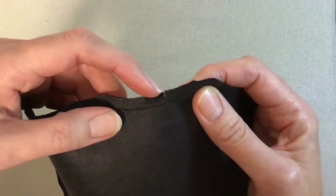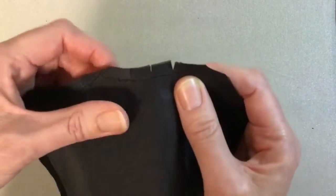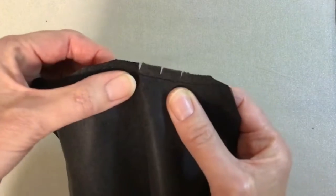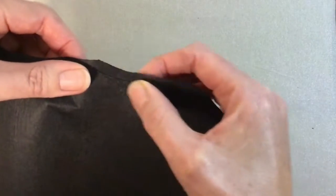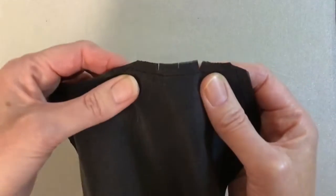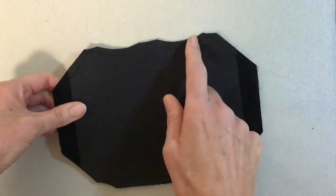Then you actually snip with your sharp scissors into there as well so that you can turn it through. Once you've turned it through it's going to want to go in to get that curve, so you don't want the extra bulk there. We just snip in there.